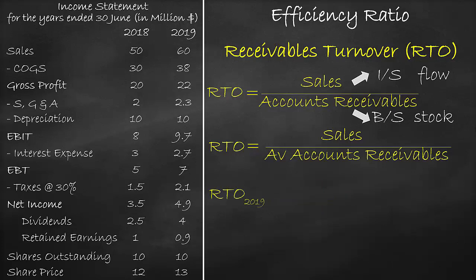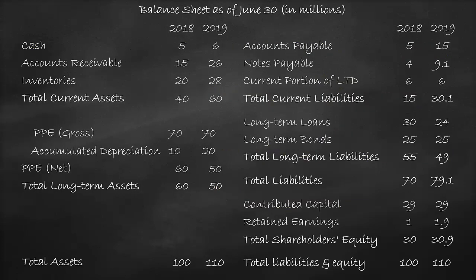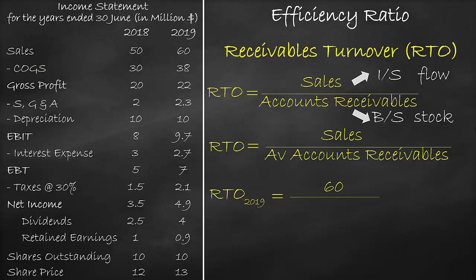Next, let's calculate the Receivables Turnover for the year 2019. Sales in 2019 is equal to $60 million. Looking at the Balance Sheet for the Average Accounts Receivables in the years 2019 and 2018: we have Accounts Receivables of $26 million in 2019 and $15 million in 2018. So in our formula, we will divide by the Average Accounts Receivables of ($26 million plus $15 million) divided by 2, which is equal to 2.93 times.